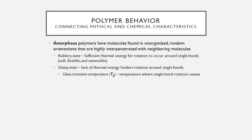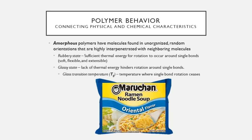The temperature dividing the rubbery and glassy states is the glass transition temperature. As college students familiar with ramen noodles, you already know this transition: below the glass transition temperature, the noodles are a solid brick — strong but very brittle and easily broken. When you heat them above their glass transition temperature, they turn rubbery, flexible, and soft — hard to break unless you get a good grip. This illustrates the difference between a rubbery and glassy state very well.